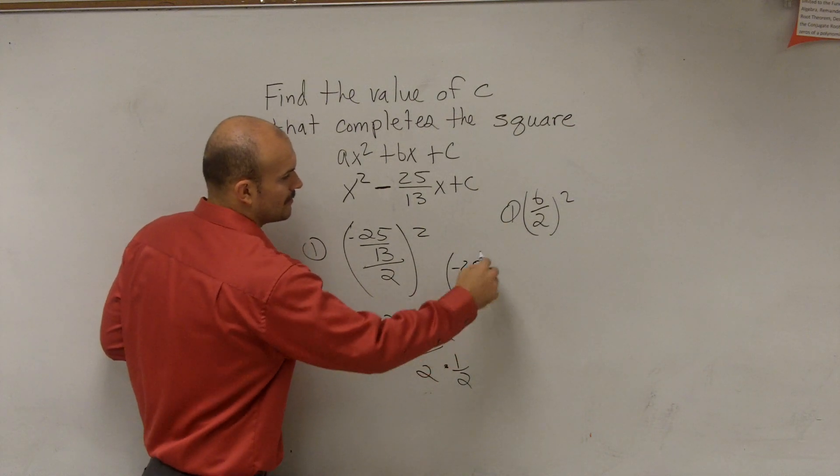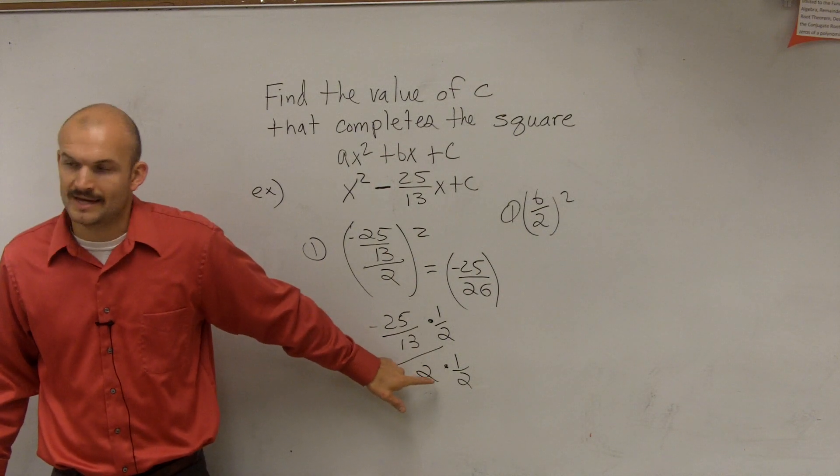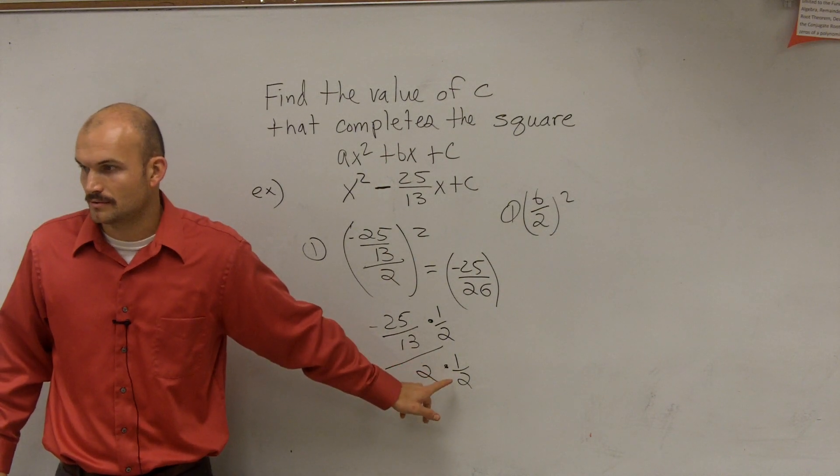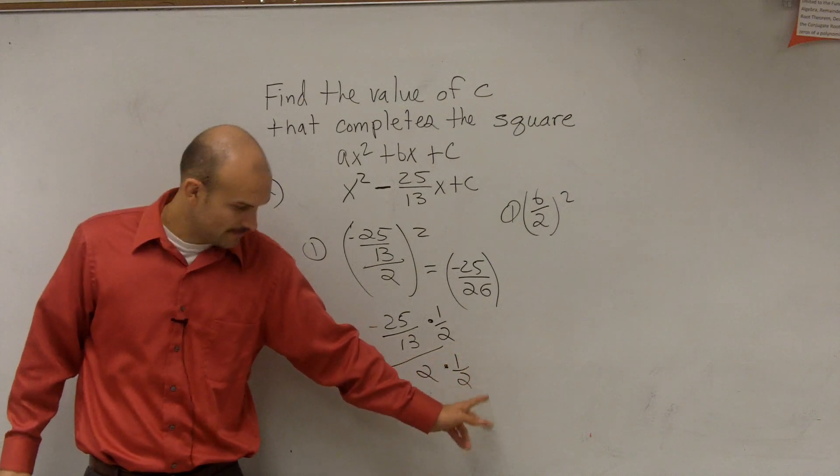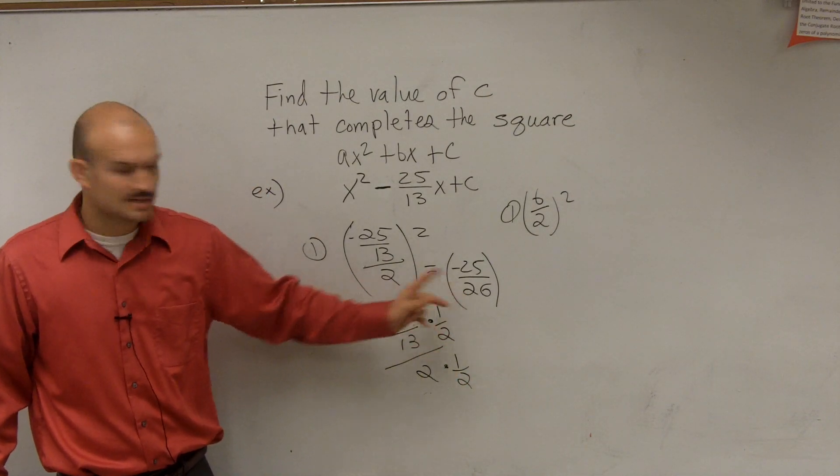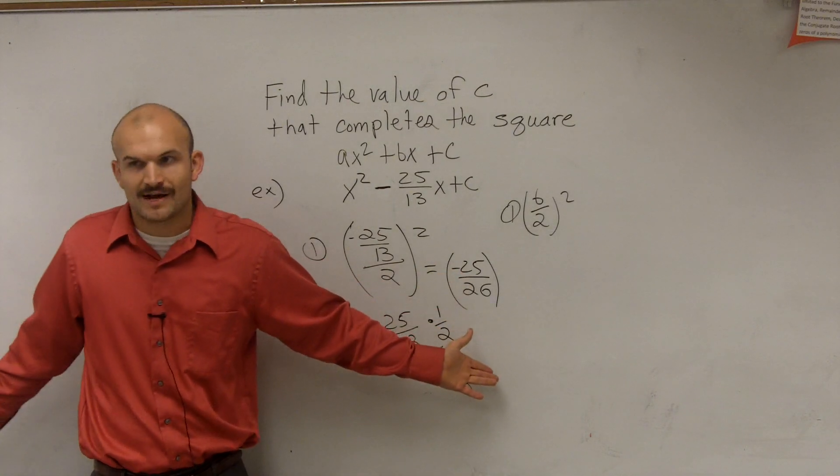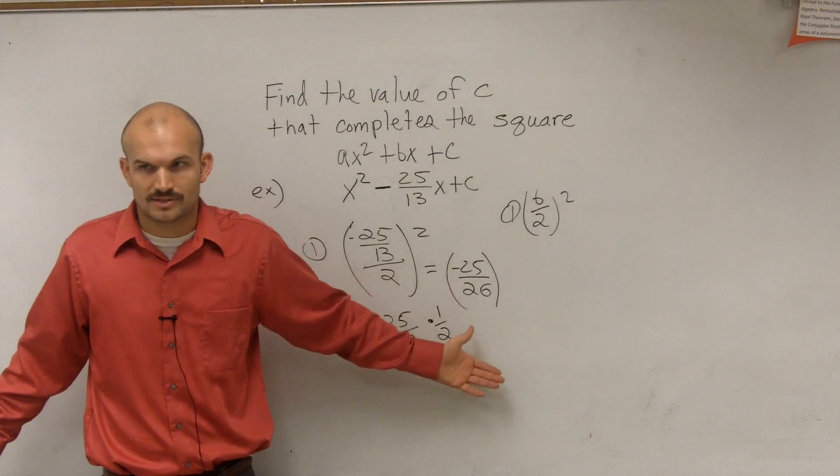So really, 2 times 1 half is what? Any number times its reciprocal is what? 1. Then I just multiply across. 13 times 2 is 26. Negative 25 times 1 is negative 25. Divided by 1. But we don't need to write the divided by 1, because that's always going to equal the same.